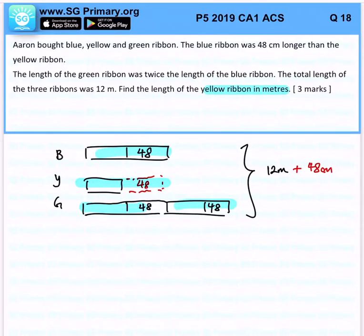What we will do is to take 12 meters plus 48 cm. That will give us 12.48.